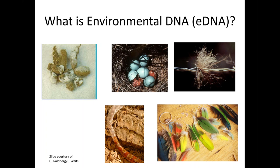Environmental DNA in general is any situation where you're able to collect and extract DNA from a source that doesn't require having your hands directly on an animal, plant, or whatever you're looking at. From that broad definition, people have been doing these sorts of studies for a number of years, including things like scat and hair — probably the two most common, pioneered really in the 1990s and into the 2000s — and other things like eggshells, shed snake skin, feathers, and so on.